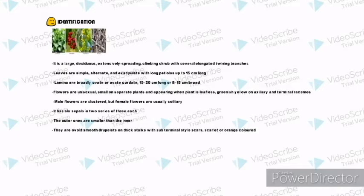Leaves are simple, alternate, and exstipulate with long petioles up to 15 cm long. Lamina are broadly ovate or ovate cordate, 10-20 cm long or 8-15 cm broad. Flowers are unisexual, small on separate plants and appearing when plant is leafless, greenish-yellow on axillary and terminal racemes. Male flowers are clustered, but female flowers are usually solitary.